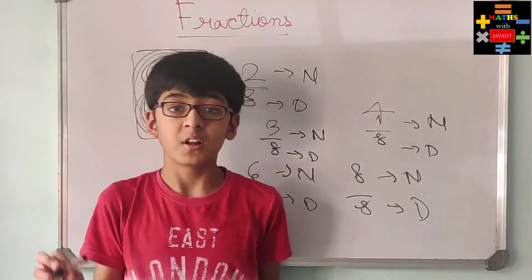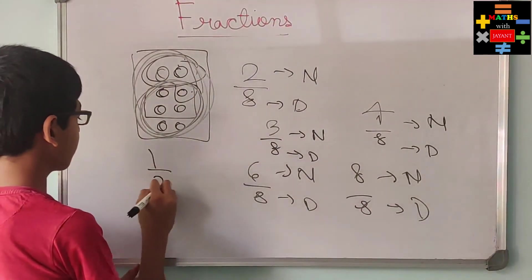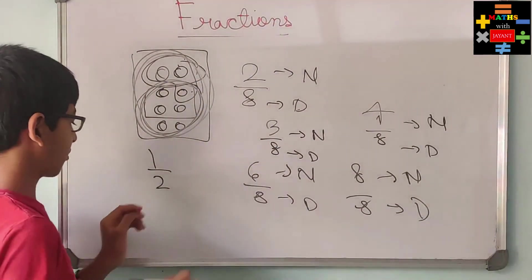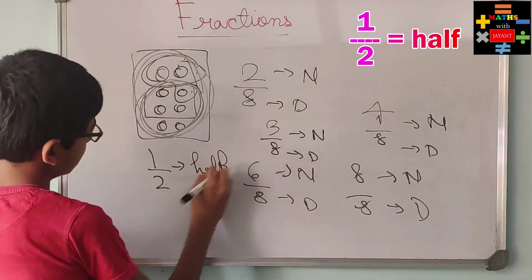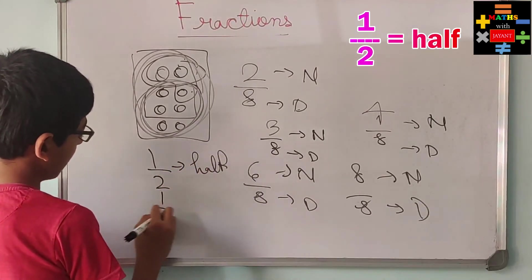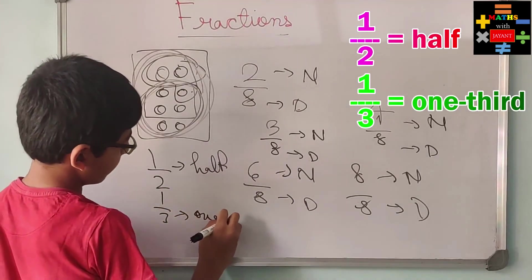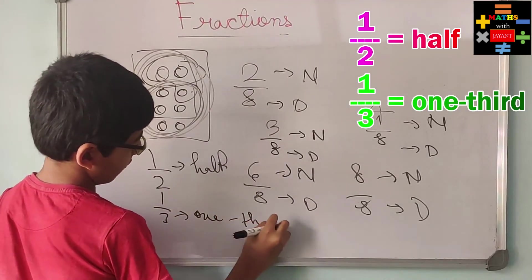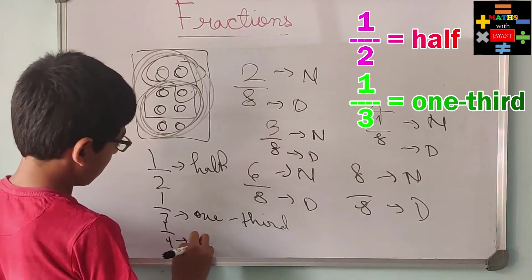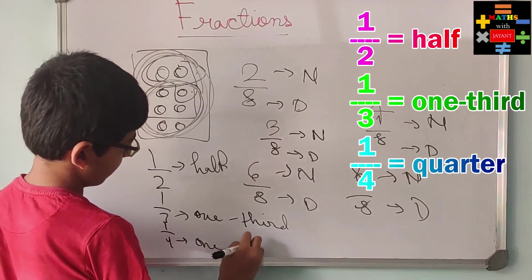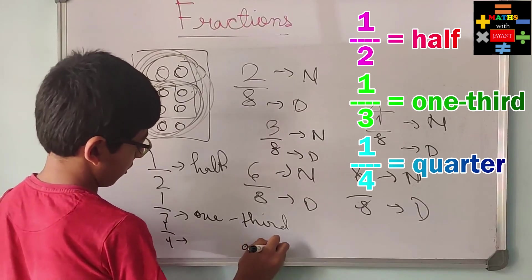Now let me tell you the most common fractions. One by two is called a half. One by three is called one third. And one by four is called one quarter — you can also just call it a quarter.